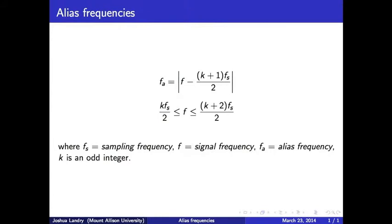Alias frequencies occur when one does not sample a signal at a high enough frequency. According to Nyquist's theorem, a signal must be sampled at a rate that is at least twice as great as the largest frequency in the signal. If one samples at a rate lower than this, there will be a lower alias frequency.